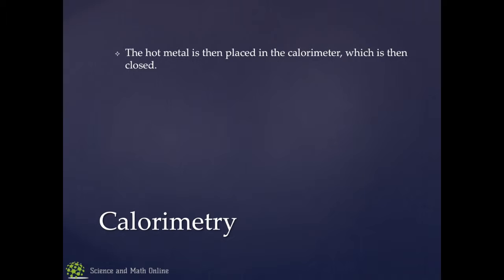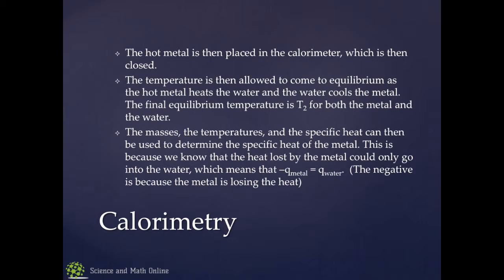Now, you take them and you mix them together. You put it into the calorimeter and then you close the calorimeter. What's going to happen to the hot piece of metal? It's going to cool off as you put it in the water. What's going to happen to the water? It's going to warm up because it's getting the heat from the metal. And so, we then allow the temperature to come to equilibrium. As the hot metal heats the water and the metal cools off, eventually you're going to reach a stable temperature. And that is T2 for both of them because they're going to be at the same temperature. As the metal cools off, the water is going to warm up until they reach this new temperature.